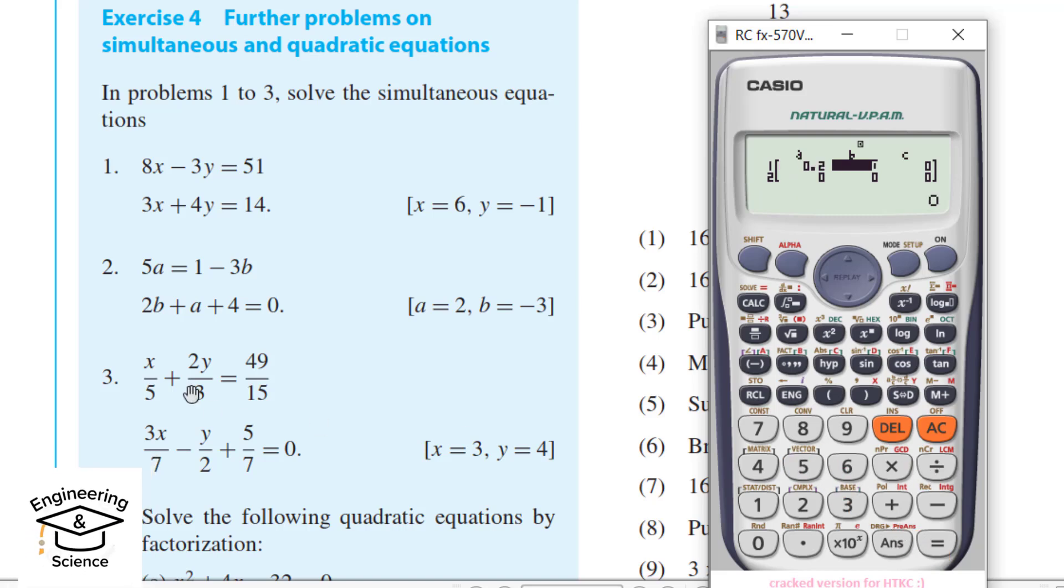b equal to 2 over 3. c equal to 49 over 15. And coefficient of x is equal to 3 divided by 7.